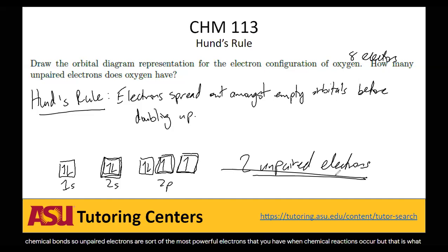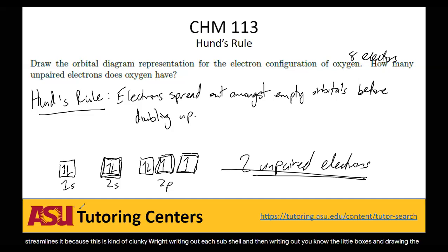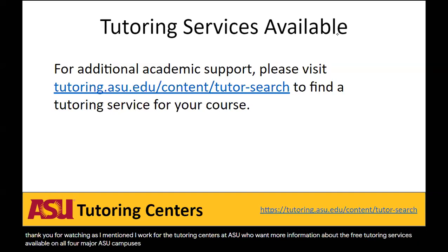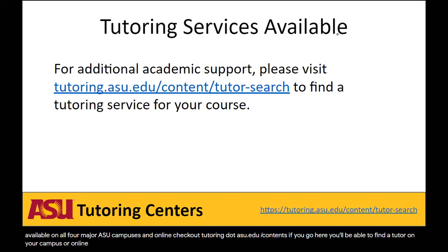That is what the orbital diagram looks like. In the next couple of videos, we'll talk about electron configurations, which streamlines this idea — because writing out each subshell with boxes and arrows is kind of clunky. We'll use electron configuration notation to write it out more neatly. Thank you for watching. I work for the tutoring centers at ASU — if you want more information about free tutoring services available on all four major ASU campuses and online, check out tutoring.asu.edu/content/tutor-search to find a tutor for your class.